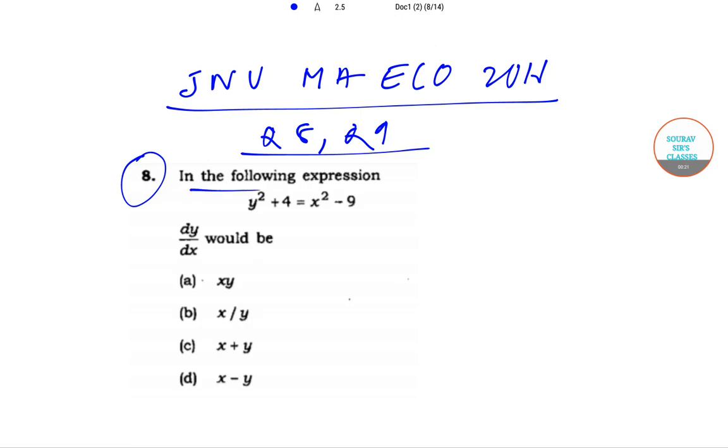In question number 8, in the following expression y square plus 4 is equal to x square minus 9, dy dx would be. The options are xy, x by y, x plus y, and x minus y.